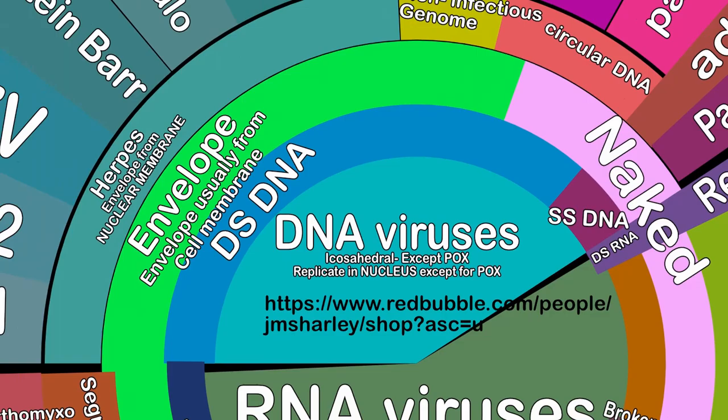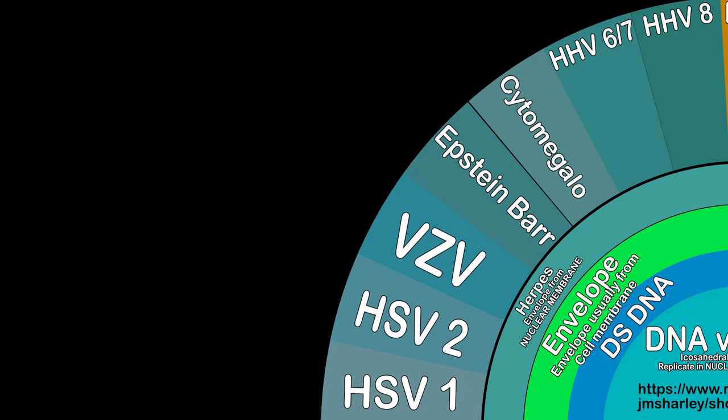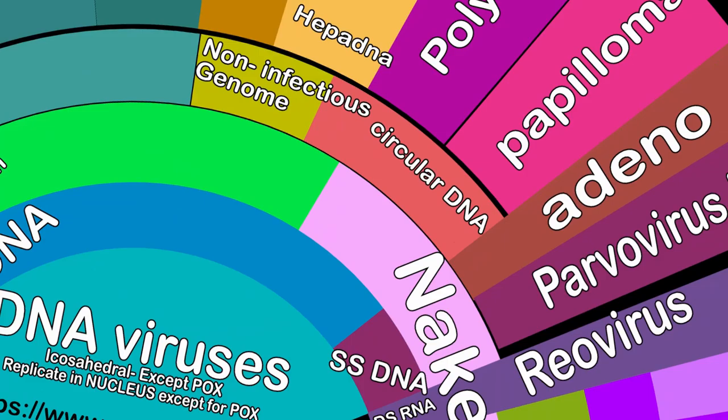Now we divide them into enveloped or non-enveloped. Herpes viruses are a big class of enveloped viruses including herpes simplex 1 and 2, varicella zoster, Epstein-Barr, cytomegalovirus, and human herpes viruses 6 through 8. Hepatitis B virus has a circular DNA.